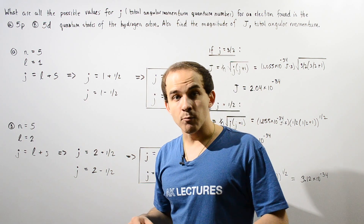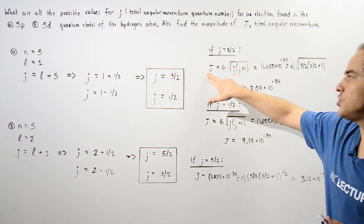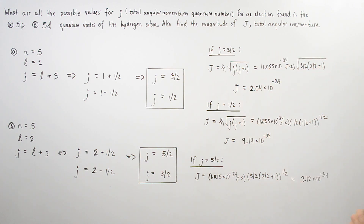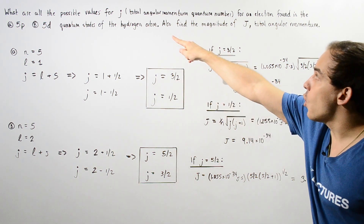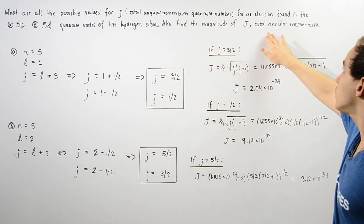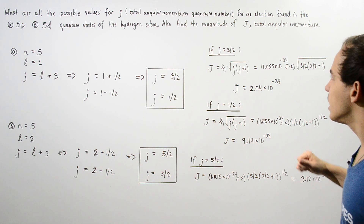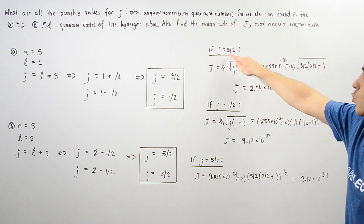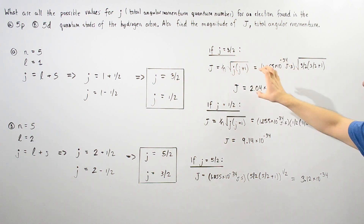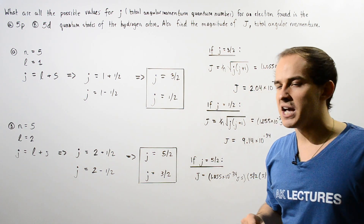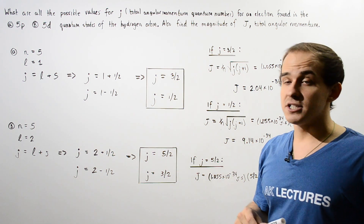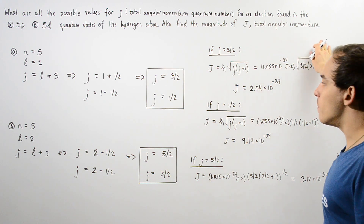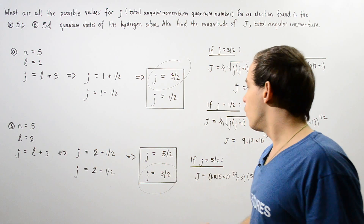To see exactly what we mean, let's calculate the magnitude of the total angular momentum. To calculate the magnitude of the total angular momentum, we use the equation: J equals h-bar multiplied by the square root of j times (j plus 1). We can see that when the total angular momentum quantum number changes, the total angular momentum will also change. For lowercase j equal to 3/2, we compute the square root of (3/2)(3/2 + 1) multiplied by h-bar, which is 1.055 times 10⁻³⁴ J·s, giving us 2.04 times 10⁻³⁴.